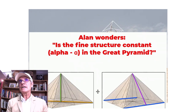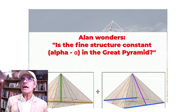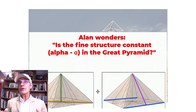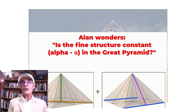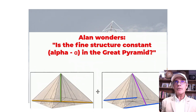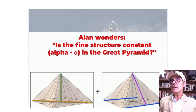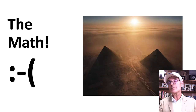Alan Green, as we showed in our last video, wondered if the fine structure constant was in the Great Pyramid, because so many other constants like phi, pi, square root of 3, Euler-Mascheroni, etc. are there. And so he found that alpha is there. You can see the two pictures at the bottom: the diagonal across the base and the height — those two added together, divided by two sides and the apothem — and that, he says, equals the fine structure constant.